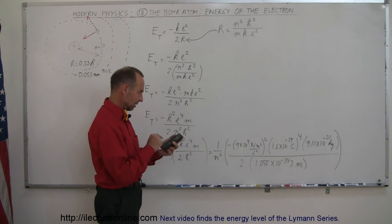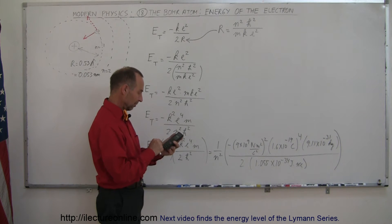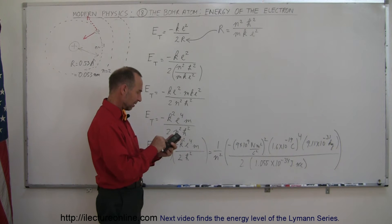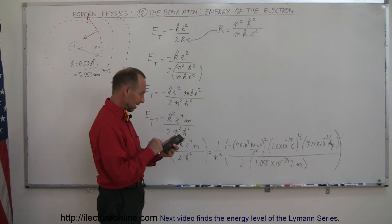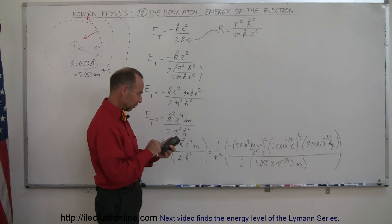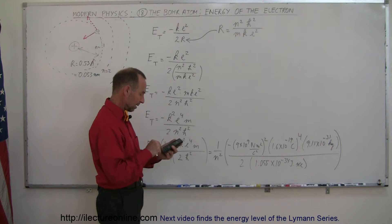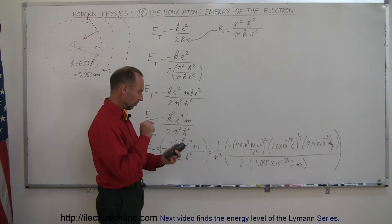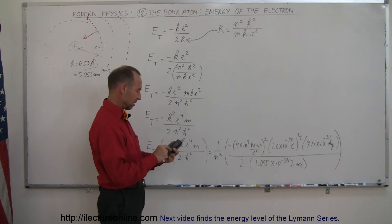Let's plug that into the calculator. That's quite an equation: 9e9 squared, times 1.6e-19 to the fourth power, times 9.11e-31, divided by 2, and divided by 1.055e-34 squared.